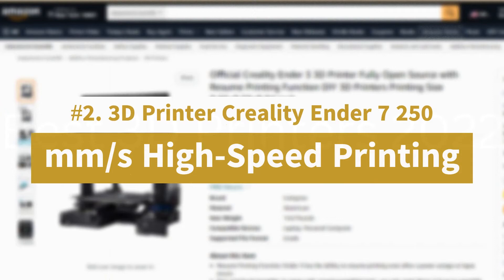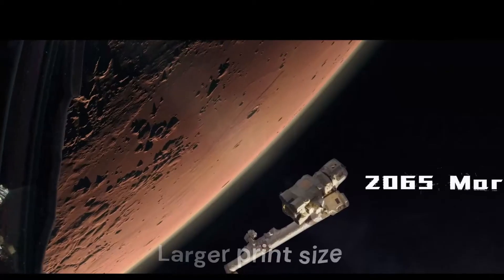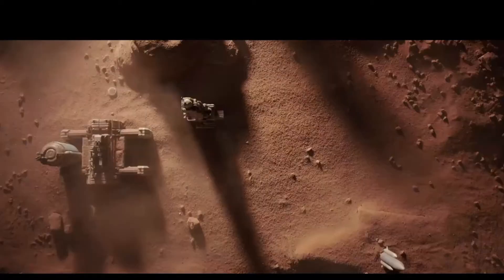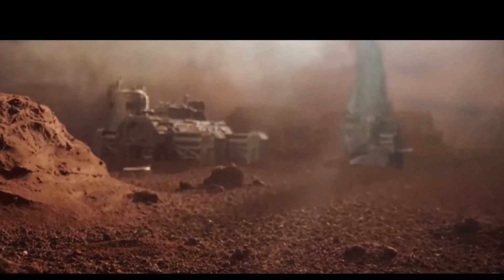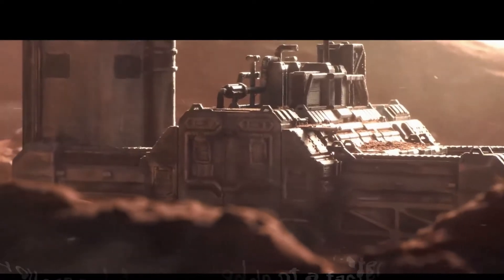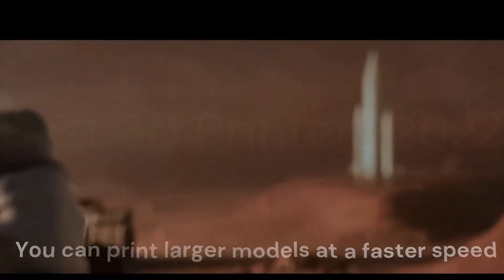Number 2. 3D printer Creality Ender 7 250mm per second high-speed printing. Larger print size, this Ender 7 supports print size 250x250x300mm, the space of the machine tool has also increased to 4000mm³, you can print larger models at a faster speed.